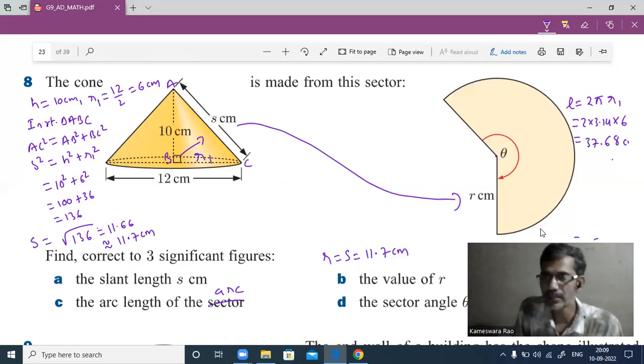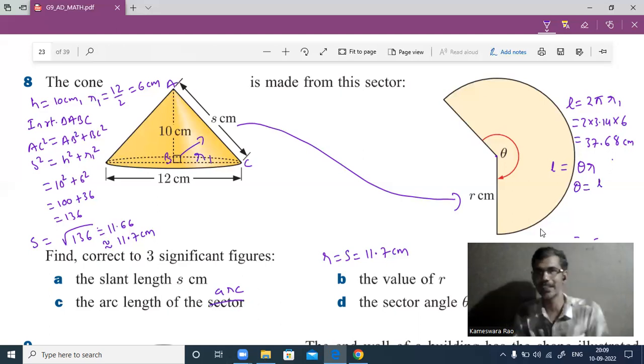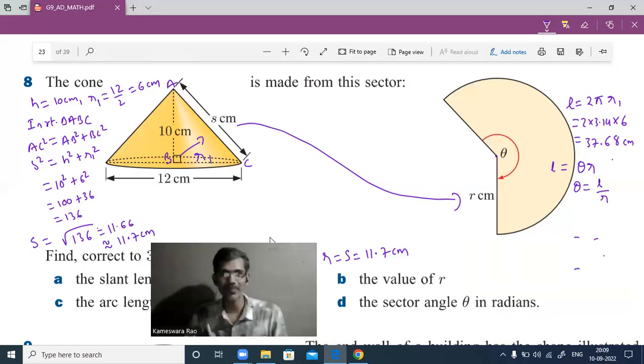To find the angle of the sector, why are we finding the length of the arc? The length of the arc formula, if theta is in radians, is l = rθ. So to find the angle of the sector, theta equals the ratio of the length of the arc and the radius. That is the reason why we found both the radius and the length of the arc.